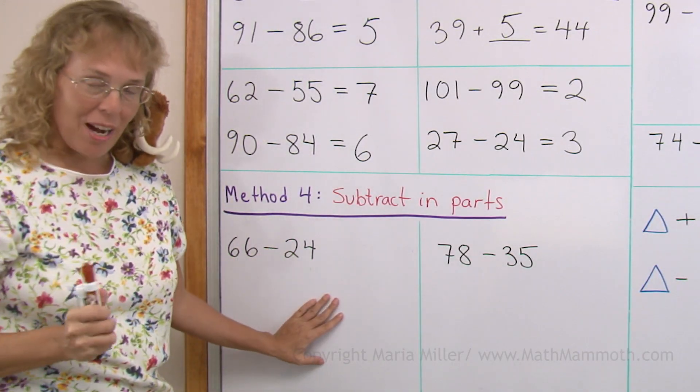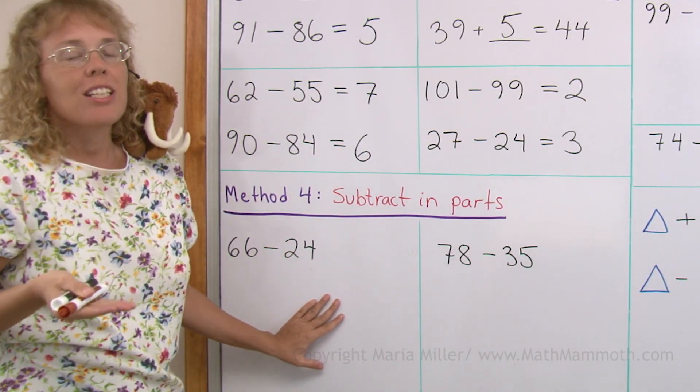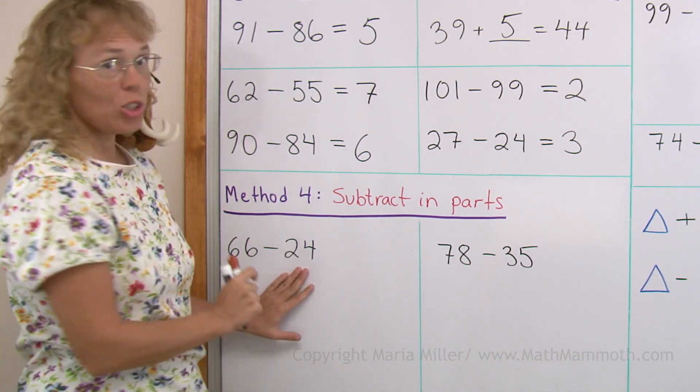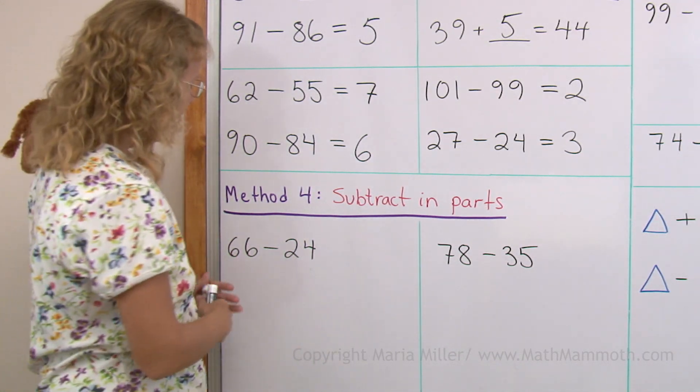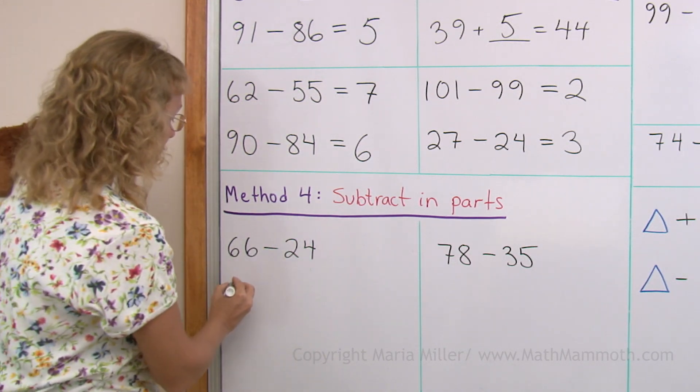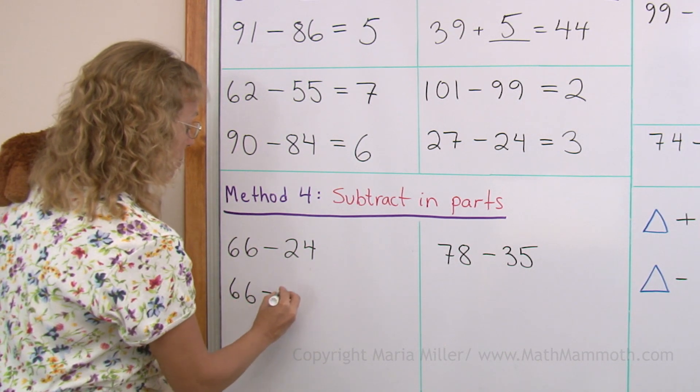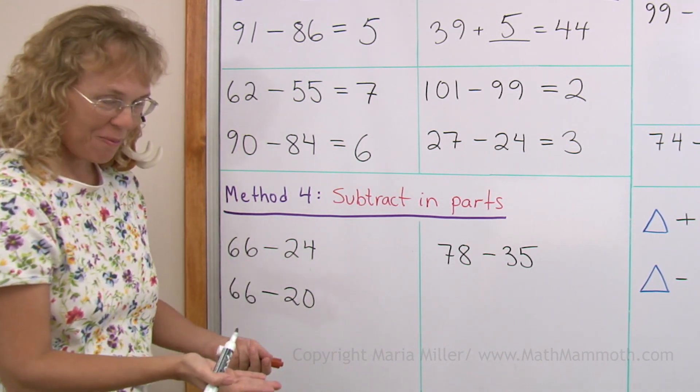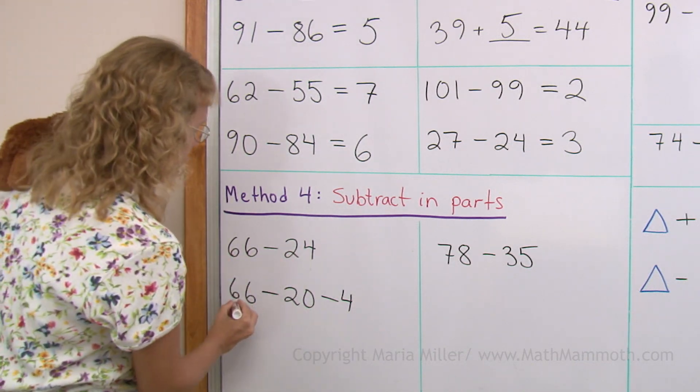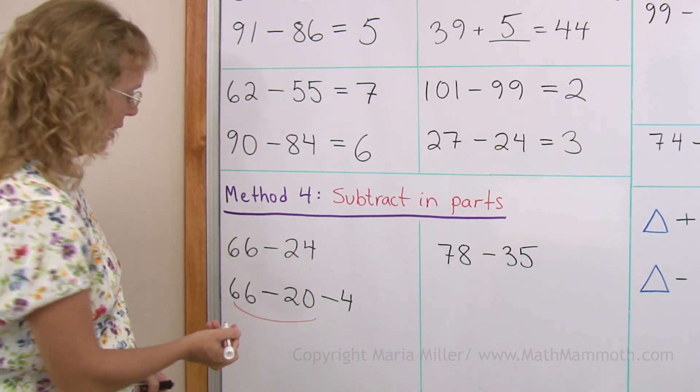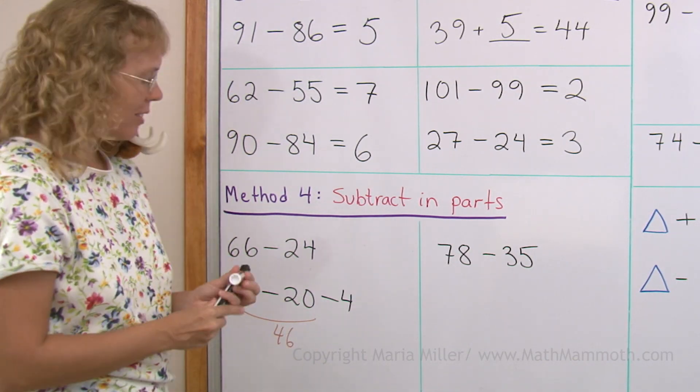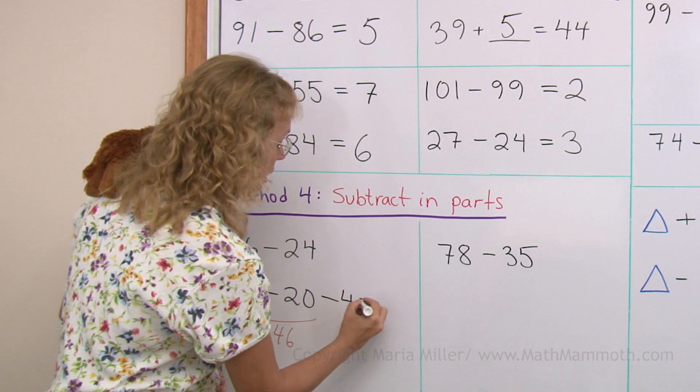Next, subtract in parts. And we have done that already in the previous lesson. But this time we are doing it with two digit numbers. 66 minus 24. One way to subtract mentally is to think of it as 66 minus 20 first. And then you subtract the 4. So 66 minus 20 equals 46. And then subtract 4. 46 minus 4 is 42.